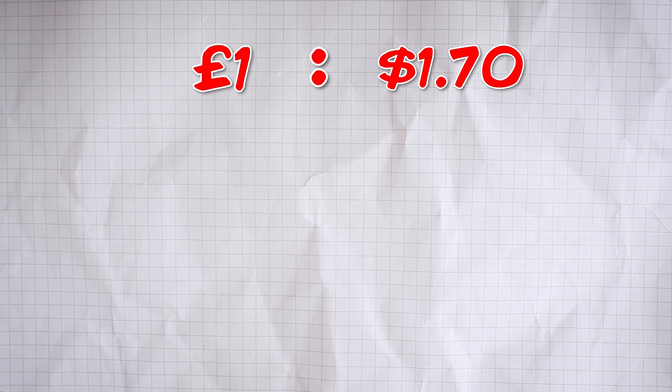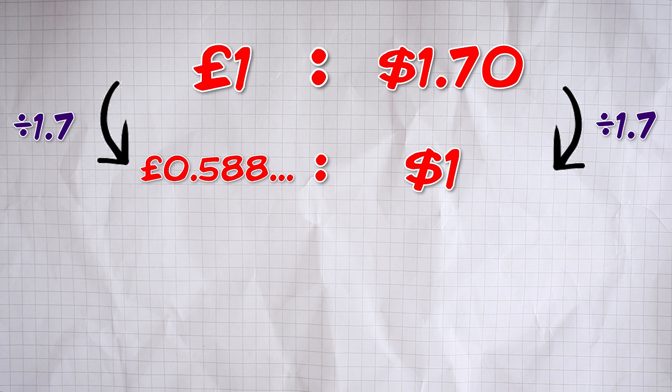So, first of all, we're going to simplify it down to $1 and we do that by dividing by $1.70 or 1.7 and we're going to mirror that on the left-hand side as well. So, with these ratios, if you multiply or divide both sides by the same amount, everything works nicely. But you can't add or subtract.